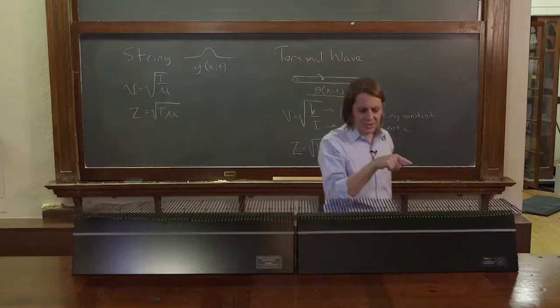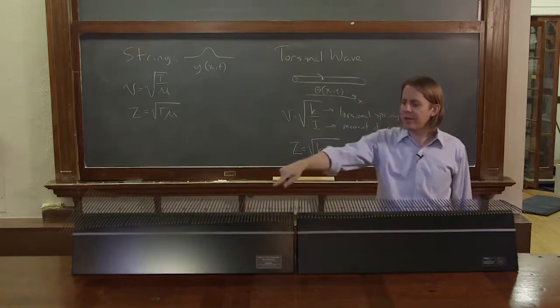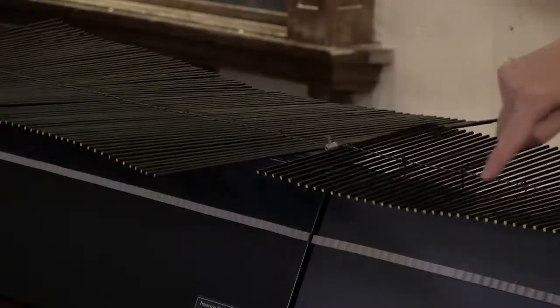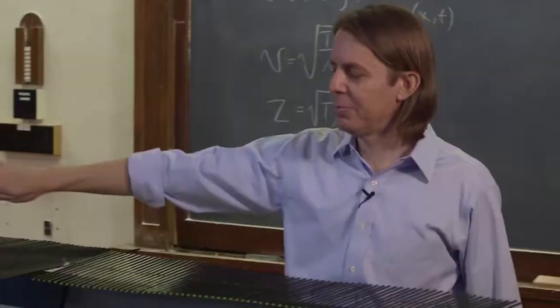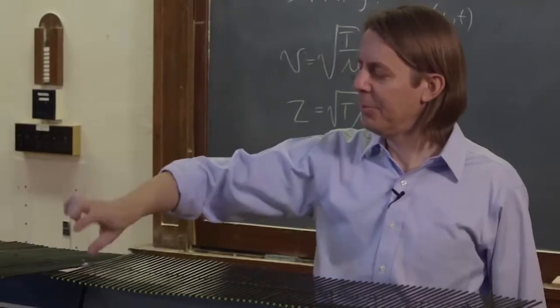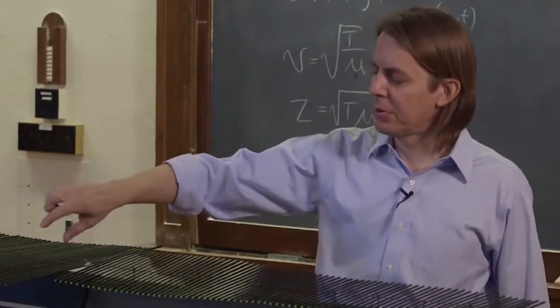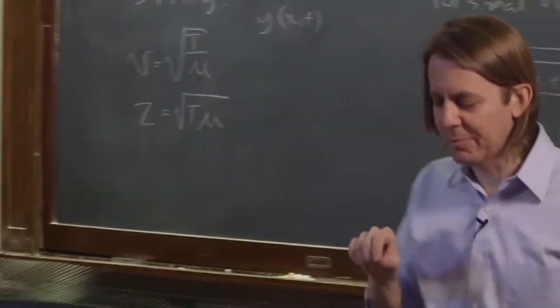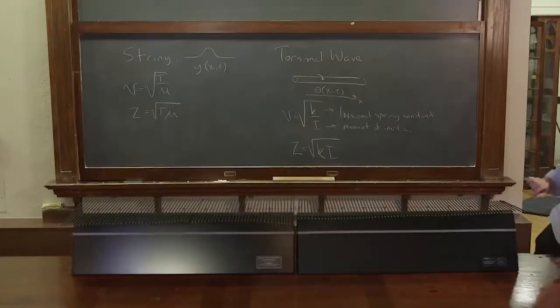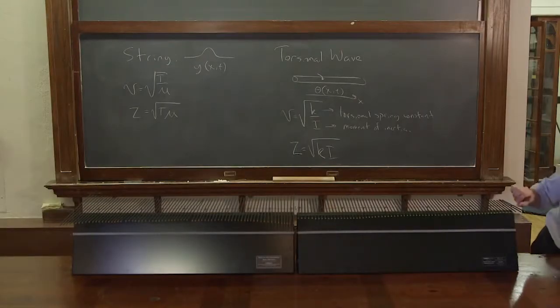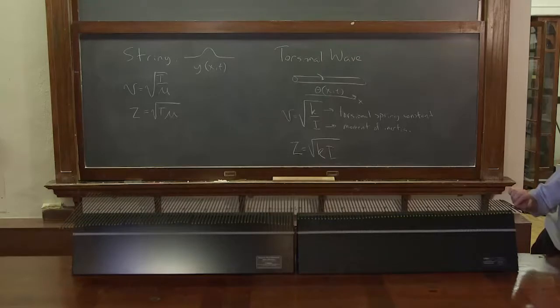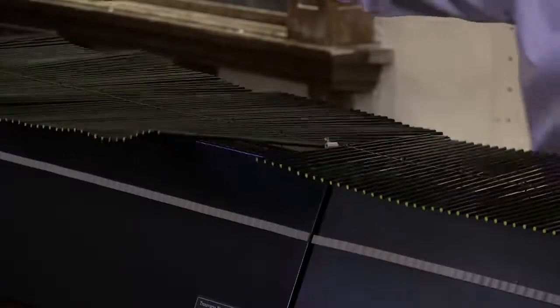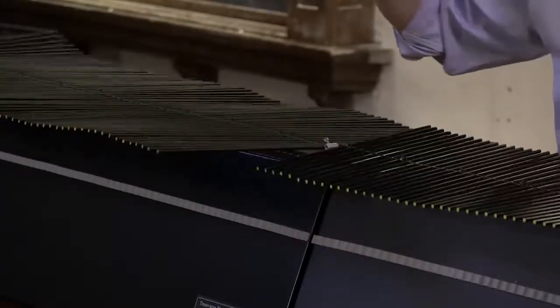So when we pulse into a higher index medium, so from low to high, we said we should reflect back negative. So we should get an inverted pulse back and we should get a positive pulse forward. And the amplitude of the positive pulse should be smaller going forward, and the reflection should probably also be smaller. So it's going to be a little bit hard to see because the waves are really fast in this, but let me just make one and we'll see if we can convince ourselves that it's reflecting back inverted. Yep, definitely came back inverted and definitely went into there positive.